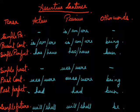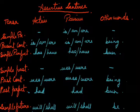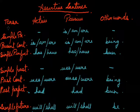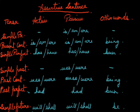Talking about active and passive voice, this chart tells us about the assertive sentence — simple present, present continuous, and simple present perfect.